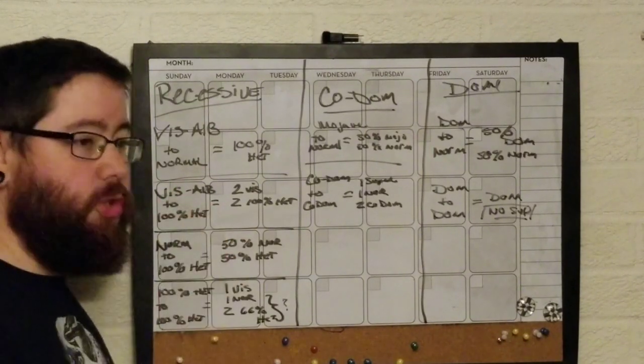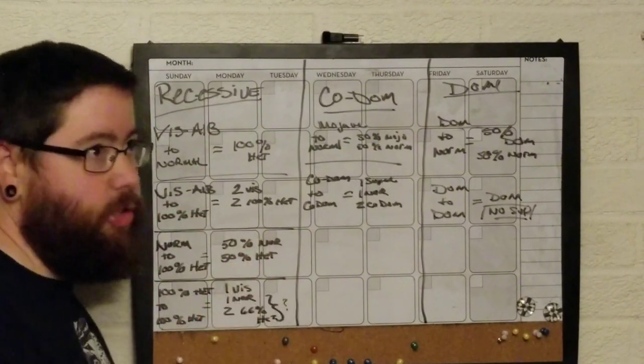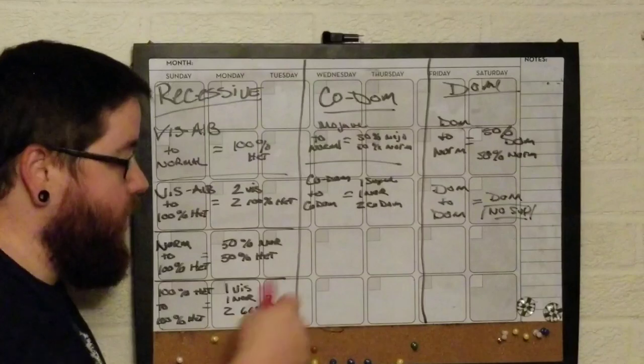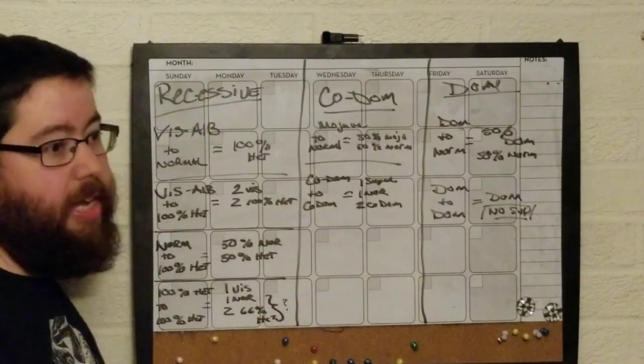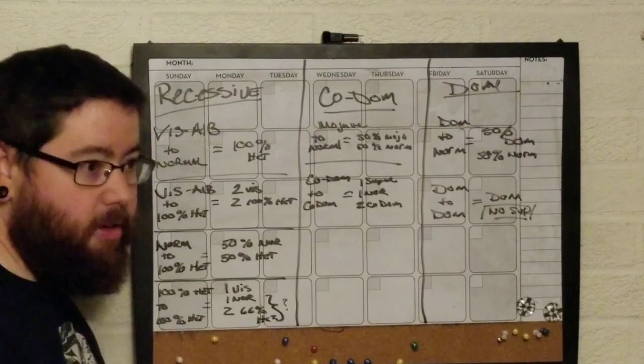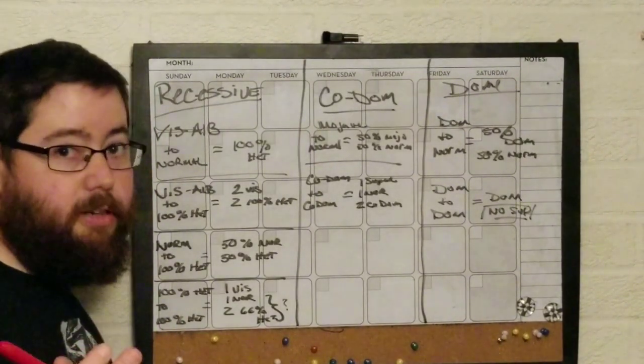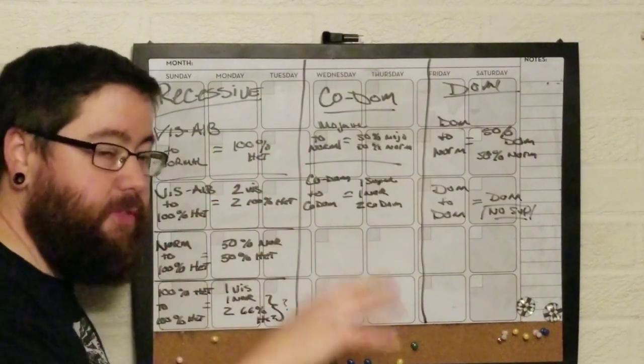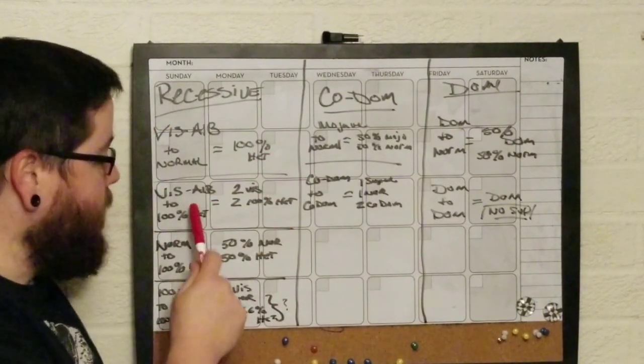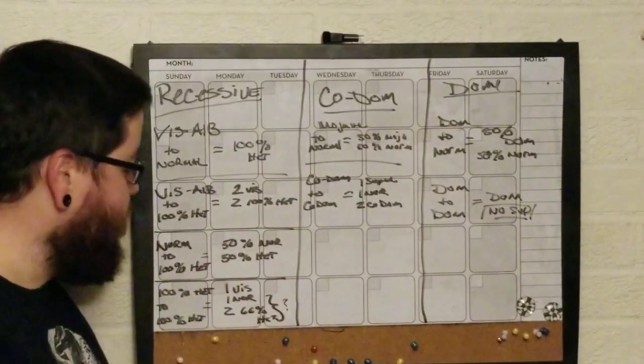So with this pairing, what I can tell you is the possibility is two visuals and two heterozygous, or one visual and three heterozygous. You can have all heterozygous. And the heterozygous ones are all going to look normal, but again, they'll carry the gene for albino. So that happens when you do a visual to a het.